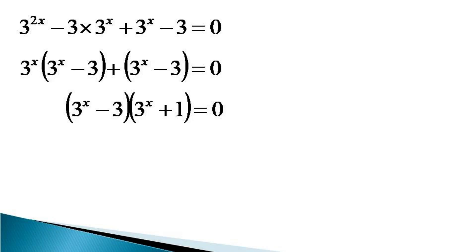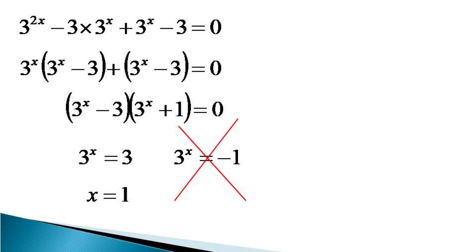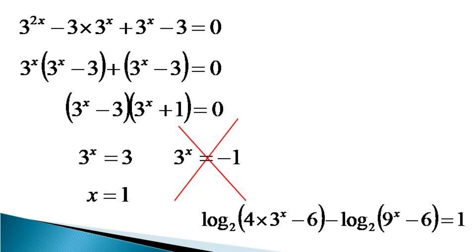This equation has two solutions. The first is 3 raised to the power x equals 3, and since the bases are equal on both sides, x equals 1. The second solution gives 3 raised to the power x equals minus 1, but since any real power on a positive number cannot result in a negative number, this solution is discarded. We can verify that x equals 1 satisfies the given equation, so x equals 1 is the only solution. Thanks for watching.